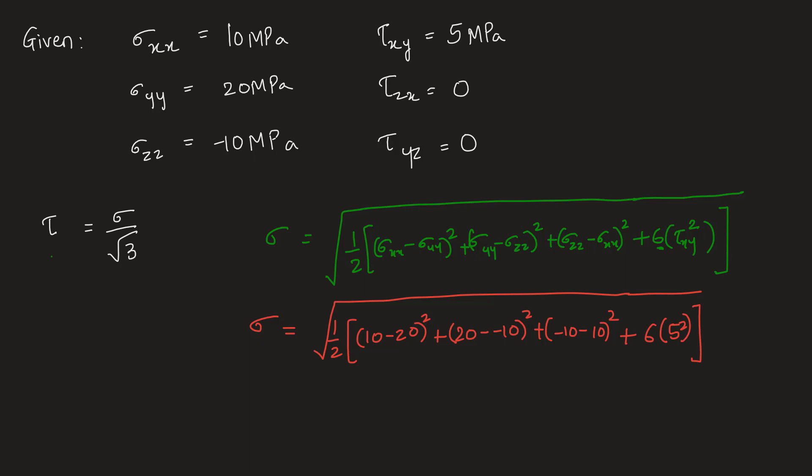So this turns out to be sigma equal to under root of 1 by 2, 10 minus 20 that is minus 10 square which is 100, plus 20 plus 10, 30 square, 900, plus minus 10 minus 10, minus 20 whole square which is 400, plus 5 square is 25 into 6 is 150.